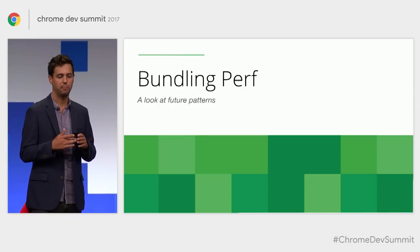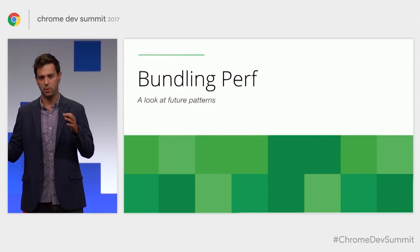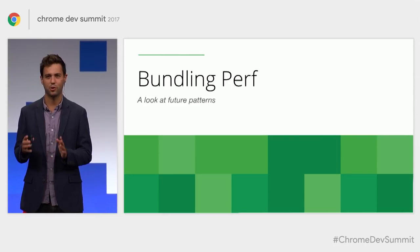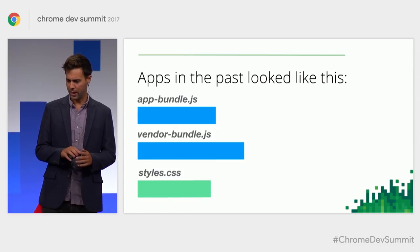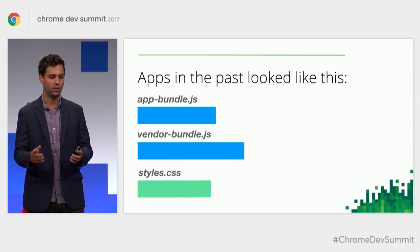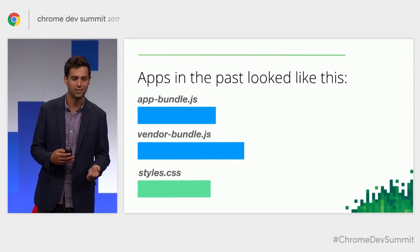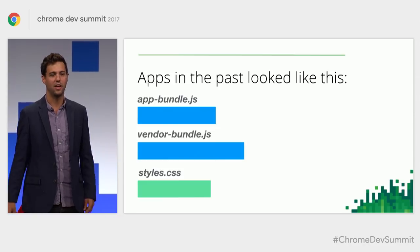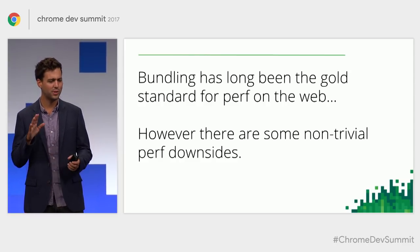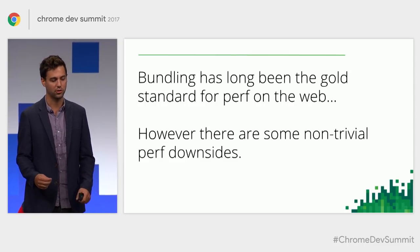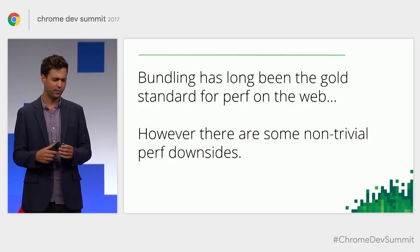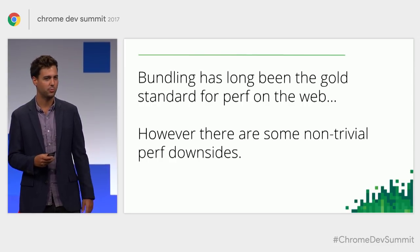I want to talk about bundling performance — bundling your files together and getting them to your user over the network. I want to look at some future patterns which are going to question our common best practices. If you've read any performance blog posts or books, they'll always say you need to bundle, combining your assets together before you ship them to your user. However, this approach has some performance downsides that not too many people talk about.